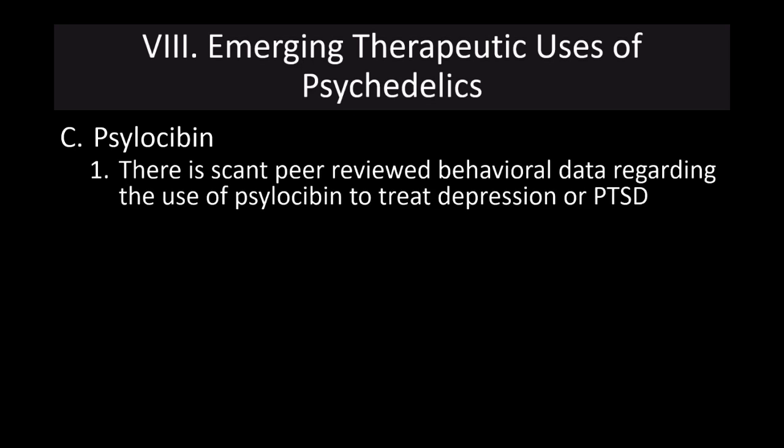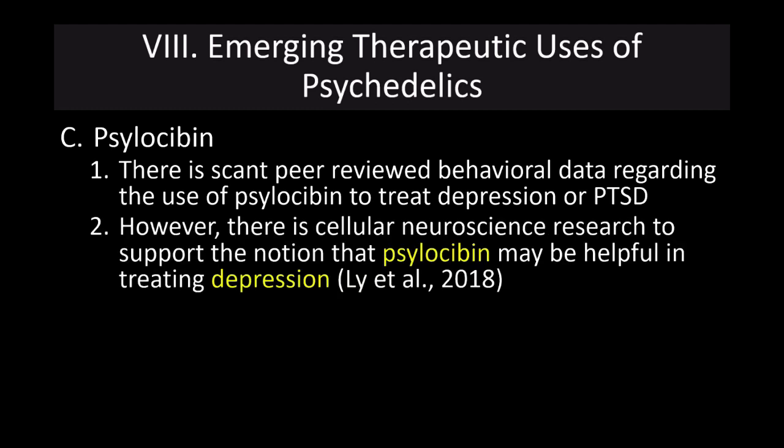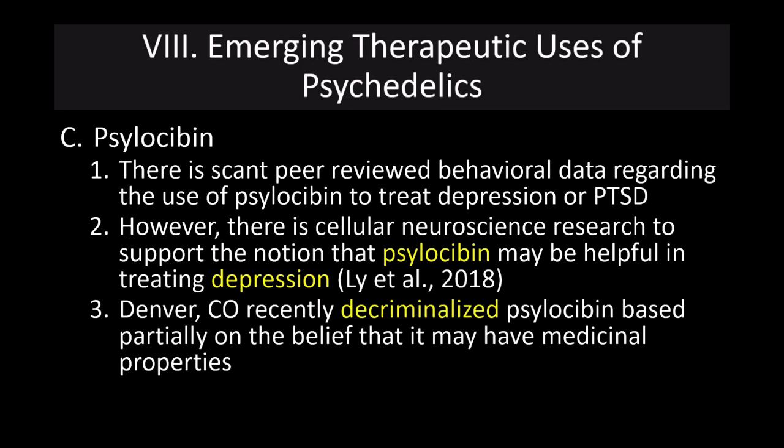There is scant peer-reviewed behavioral data regarding the use of psilocybin to treat depression or PTSD — a lot of Neo-Freudian and Jungian psychology but nothing definitive. However, there is cellular neuroscience research supporting the notion that psilocybin might be helpful in treating depression. Recently, Denver, Colorado decriminalized psilocybin based partially on the belief that it may have medicinal properties — while you can't legally buy psilocybin mushrooms in Denver, possession is no longer a crime. That concludes our discussion of psychedelics focused on hallucinogenic compounds. Our next couple of lectures will focus on marijuana and CBD products.